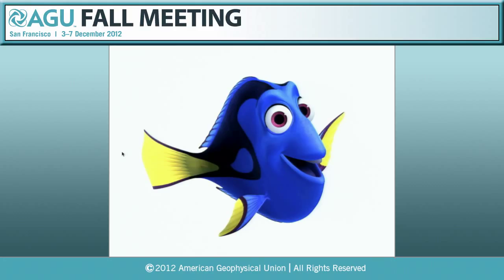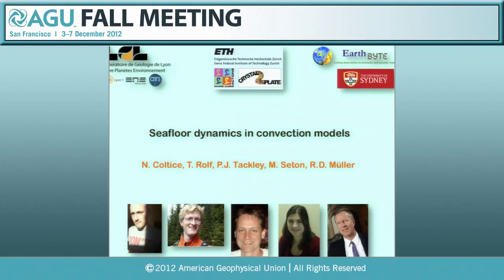I have something in common with Dory — I have very bad memory. When it comes to seafloor spreading, the memory I have access to is just 200 million years. Not more than that, very little compared to the age of the Earth. Is it enough to use these 200 million years to extrapolate the fluctuations we know of seafloor spreading over a longer time scale? I will try to show that with mantle convection models we have access to longer time scales.